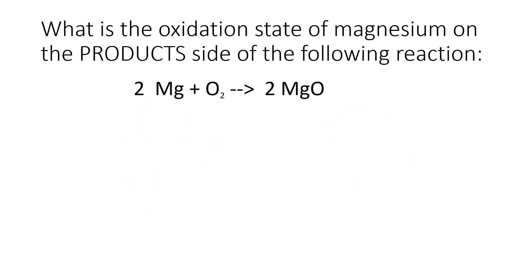What is the oxidation state of magnesium on the product side of the following reaction? The product side is the right side. What type of compound is this — ionic or covalent? It's ionic because there's a metal and a non-metal. For an ionic compound, we have charges on our ions. The charge on magnesium when it forms an ion is plus two, so the oxidation state is plus two. The oxidation state equals the charge on your ion.